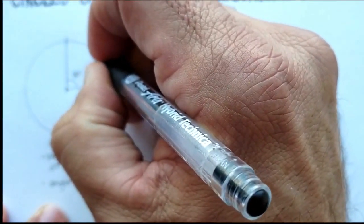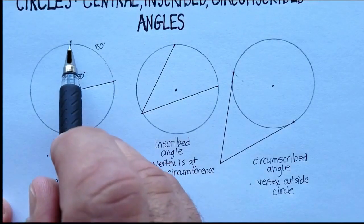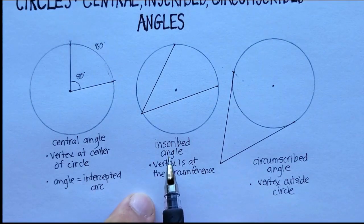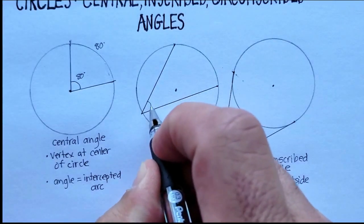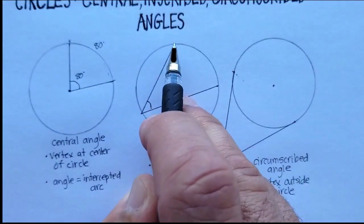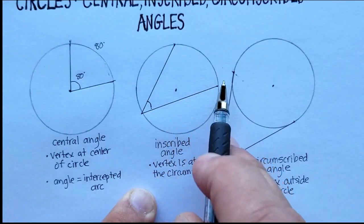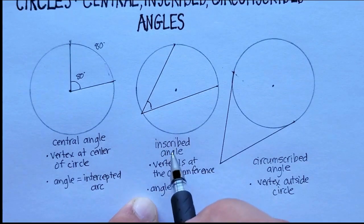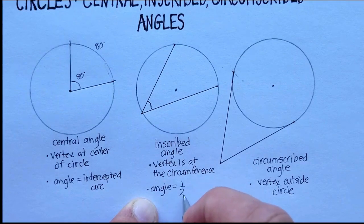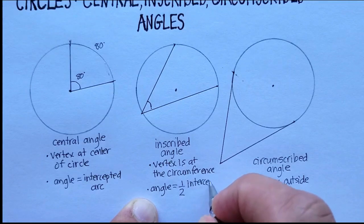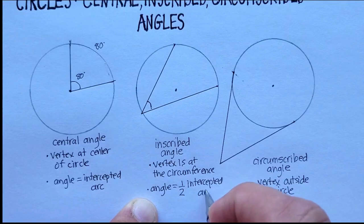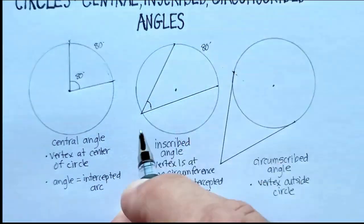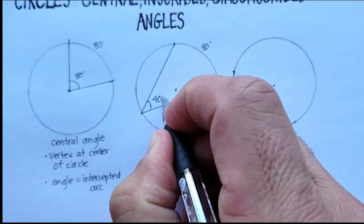Remember, the arc is that portion of the outside of the circle. For an inscribed angle, it's a little different — the angle itself is one half the measure of the intercepted arc. So if the arc were 80 degrees, the inscribed angle would be 40 degrees.